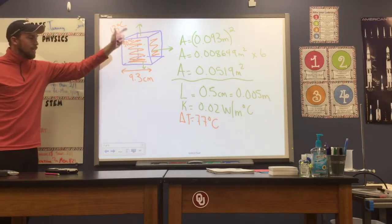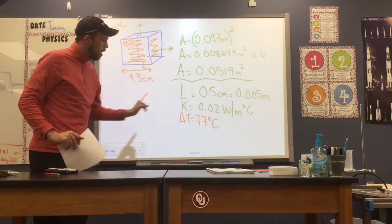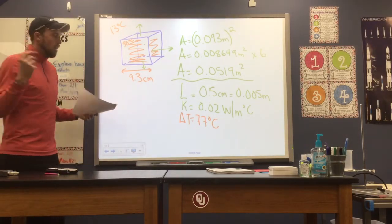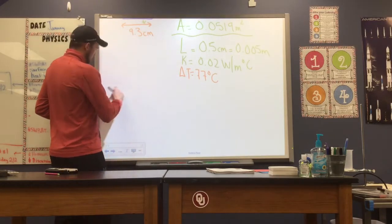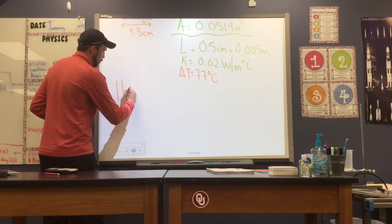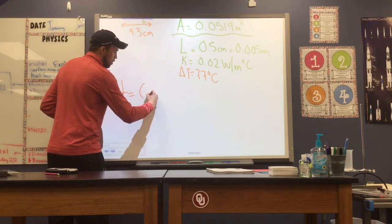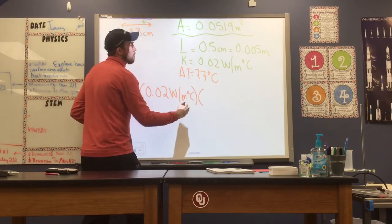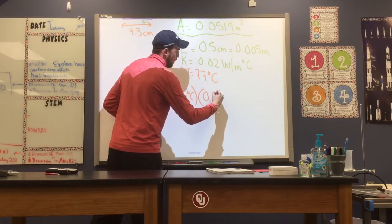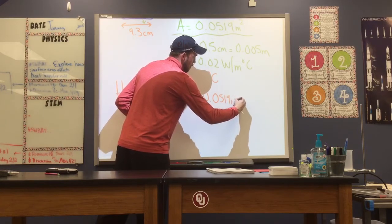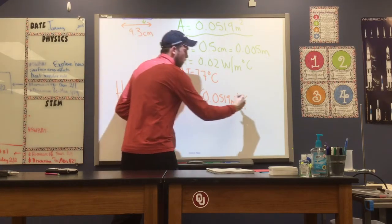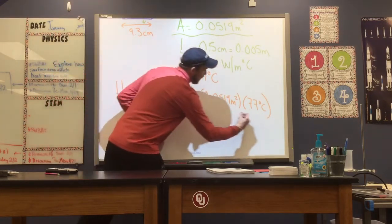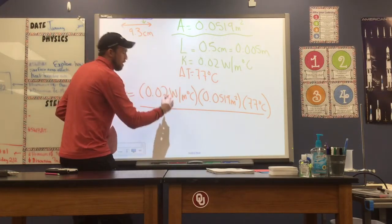So now that we have our contact area, the length or thickness of our material, our thermal conductivity and difference in temperature, we can plug those values into our heat transfer rate for conduction and see if we can come up with a value. Here we go. Heat transfer rate is thermal conductivity K, which is 0.02 watts per meter degree Celsius, times our contact area, 0.0519 meters squared, times our temperature difference, 77 degrees Celsius, and then we divide by the length of our material or its thickness, 0.005 meters. Make sure we're careful with the conversion there from centimeters to meters.